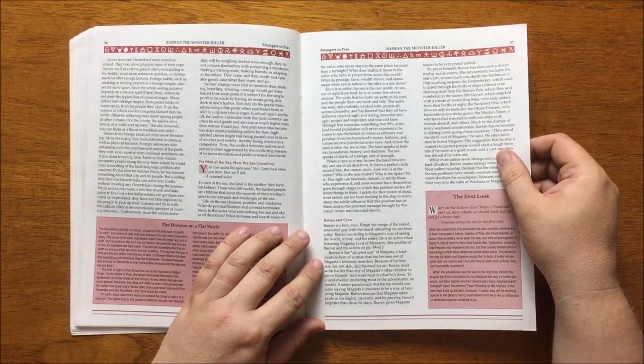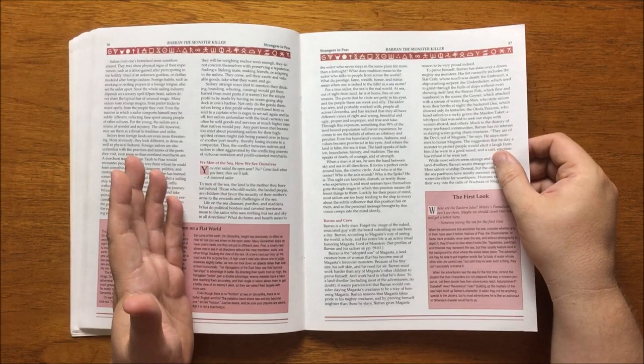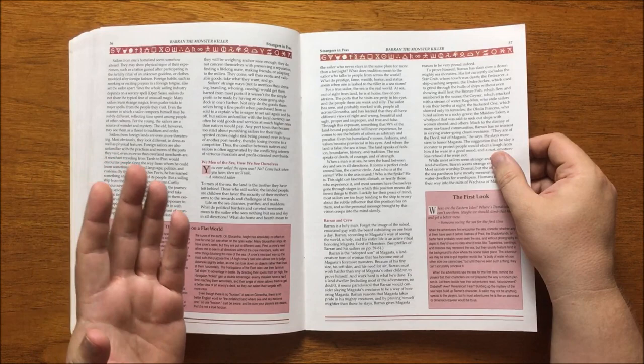It then moves on to Baron. He is a holy man whose entire life is devoted to Magaster. He considers that he honours Magaster by slaying the mighty creatures that he creates. His reasoning is that he is proving that he is mightier than them and thus makes Magaster proud. He is slaying over a dozen mighty sea monsters such as the Star Crab, the Embracer, the Underdecker, the Bronzefish, the Geezer,